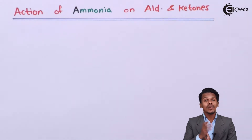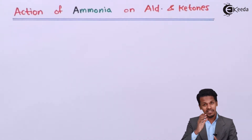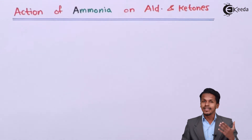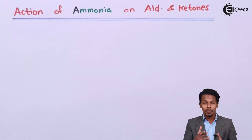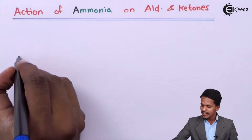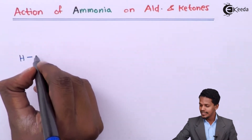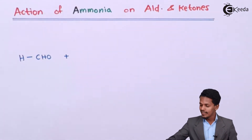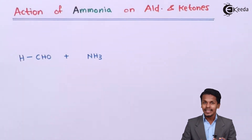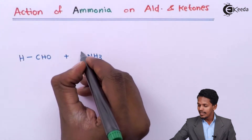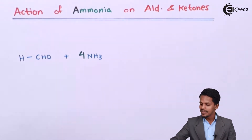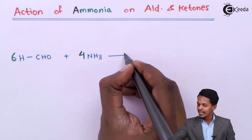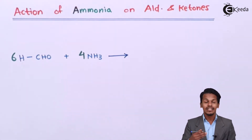So now we are going to discuss about what is the action of ammonia on aldehyde. The first member of the aldehyde is formaldehyde. The reaction of formaldehyde with ammonia is as follows: if formaldehyde represented as HCHO is treated with excess ammonia NH3, it has been noticed that 4 moles of ammonia react with 6 moles of formaldehyde. The product formed is known as urotropin.